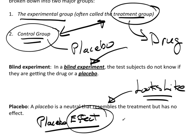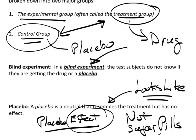Placebos are not sugar pills. Typically people say it's a sugar pill, but that's not accurate. A placebo is something truly inert — it could be distilled water. You wouldn't give sugar pills as a placebo when someone is involved in, say, a diabetes study. So get rid of the idea of a sugar pill and think of something neutral and inert, like distilled water.